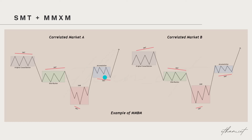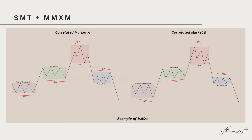Finally, we have the accumulation phase where market A makes a lower low, taking out that liquidity, and then market B fails to take out that low. A lot of times, people fixated on just one market — let's say ES on the right and NQ on the left — when they're looking for a liquidity sweep on ES and they don't get it, it's because SMT has occurred within the markets. And we have the exact same thing in a market maker sell model format, just with the distribution and accumulation phases swapped.